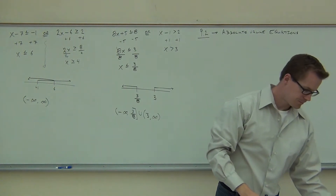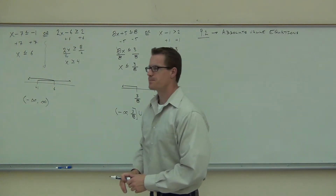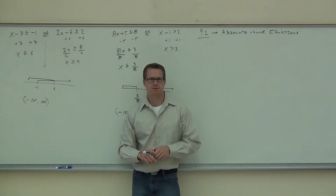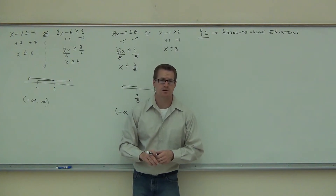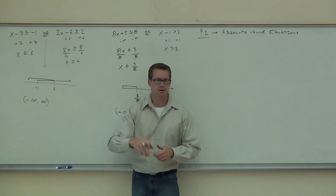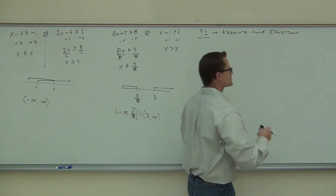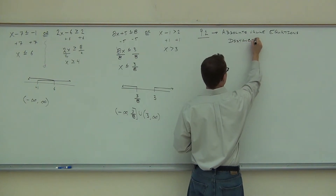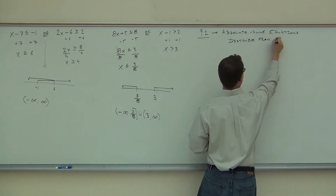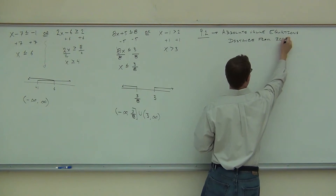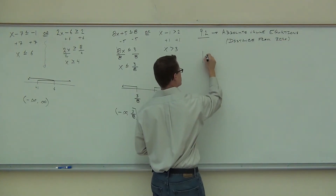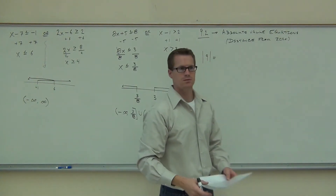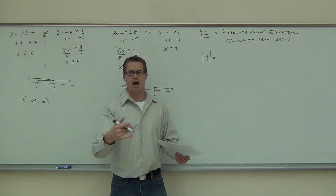Absolute value equations. Can you tell me what does absolute value calculate, or what's it determine? Distance from zero. That's exactly right. So if absolute value calculates the distance from zero — how much is the absolute value of nine? Nine. What that's saying is that nine is just nine units away from zero.